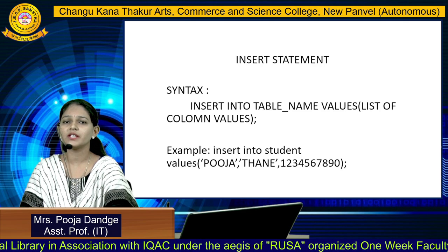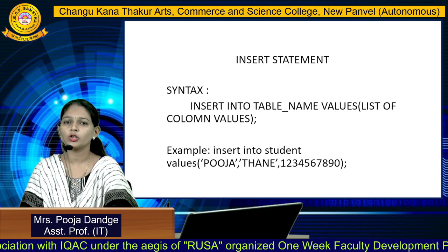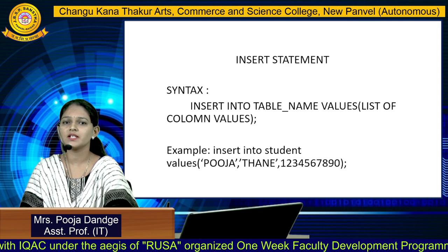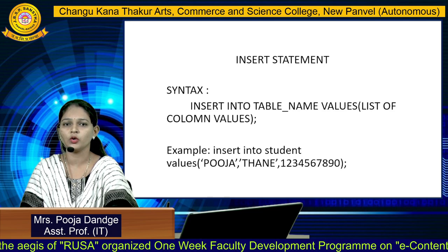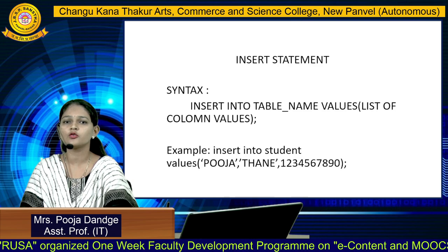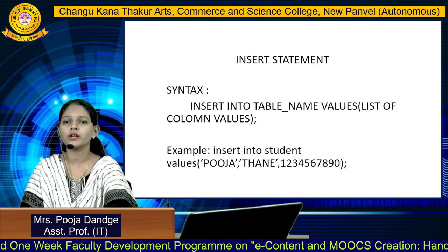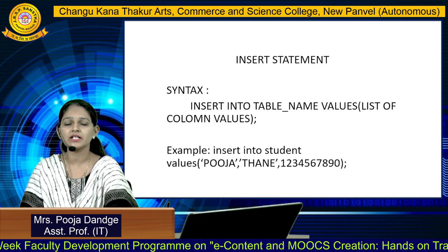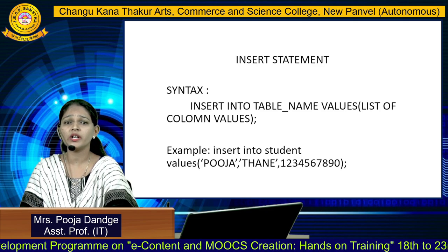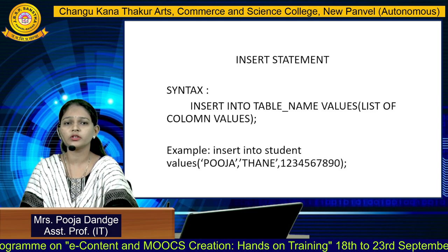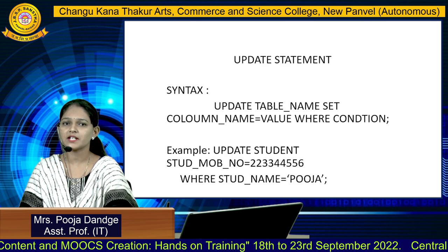After the first value, I make a comma, then mention my address 'Thane' also in single quotes because it is a string value. After another comma, I specify the mobile number. The mobile number is a number or integer value, so I directly specify that number — there is no need to insert single quotes around a number.